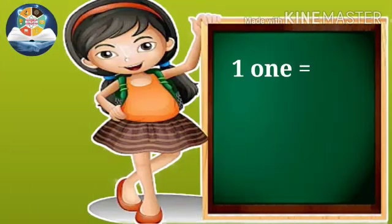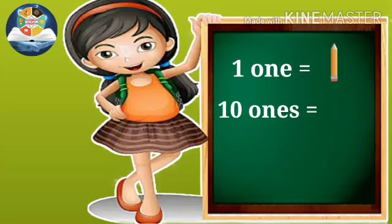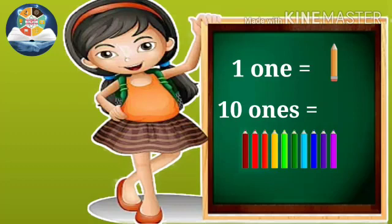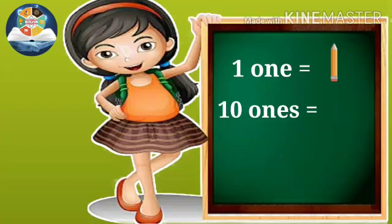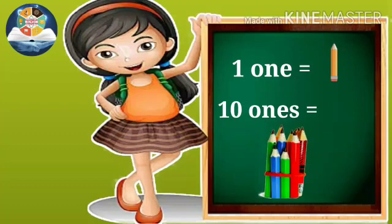One one means one pencil. Hence ten ones means ten pencils. So when we group ten pencils together, we get one ten pencils.